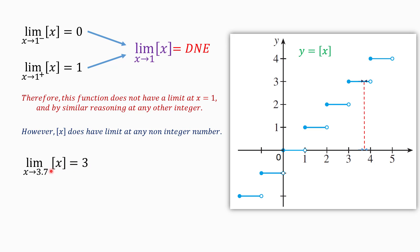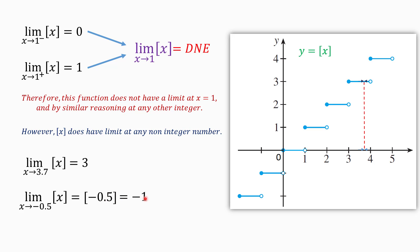So we don't need to look at the graph — only a simple plug-in is needed. Another example: the limit of the greatest integer of X, or floor of X, as X approaches negative 0.5. This limit exists because the greatest integer function has a limit at any non-integer number, and negative 0.5 is non-integer. To find the limit, we substitute negative 0.5 for X: the greatest integer of negative 0.5, rounding down, equals negative 1. So the limit equals negative 1.